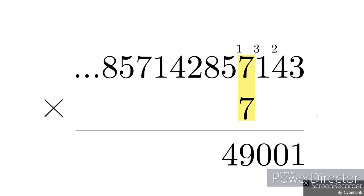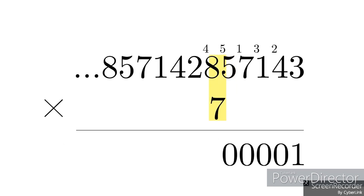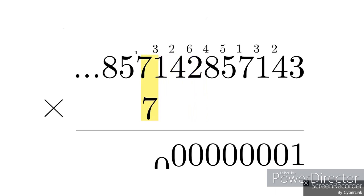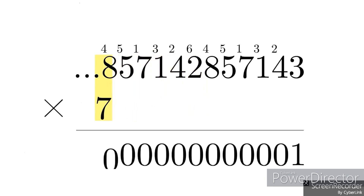7 times 7 is 49 plus 1 is 50, carry the 5. 7 times 5 is 35 plus 5 is 40, carry the 4. I can keep on going forever and you will find that all other digits are 0.